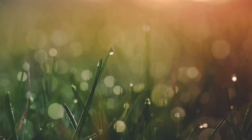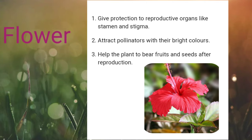Now, let us learn about the flower. Flower contains male and female reproductive organs and helps in reproduction. The colorful petals of the flowers also attract insects which help in pollination. After pollination, the flower also helps in bearing fruits and seeds.